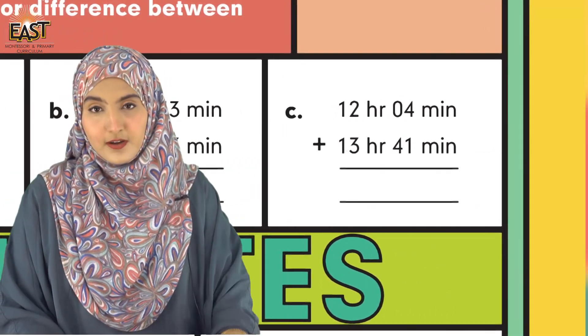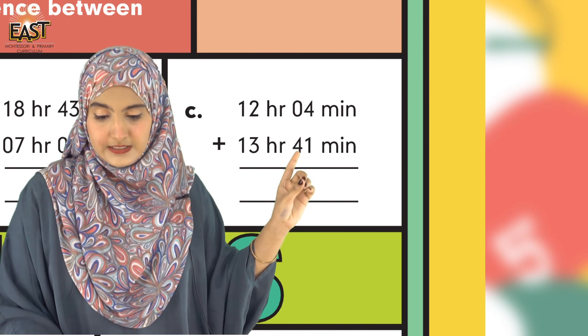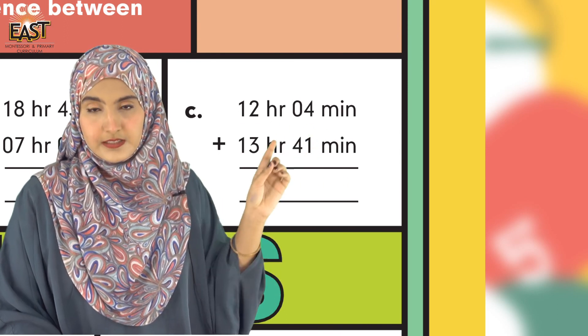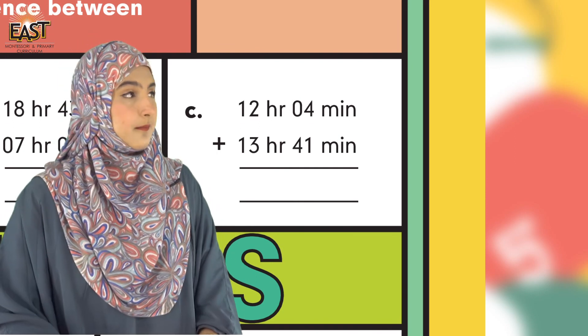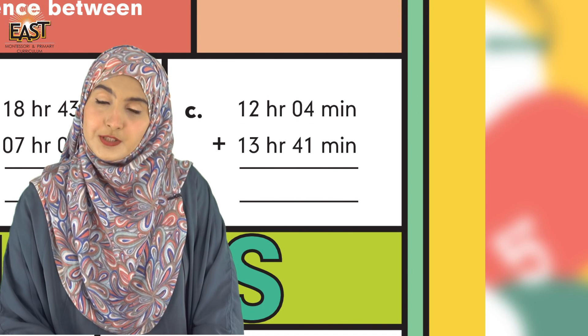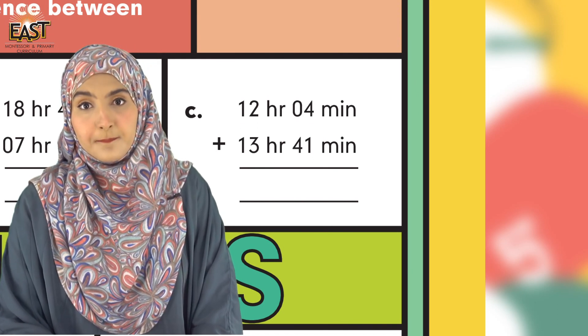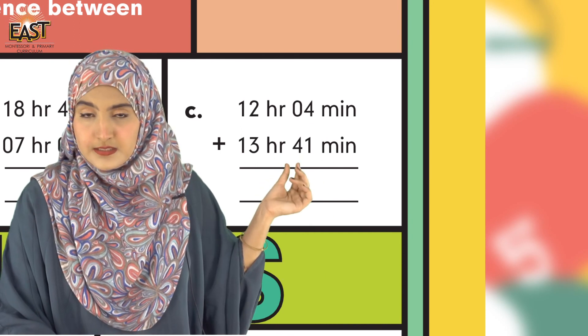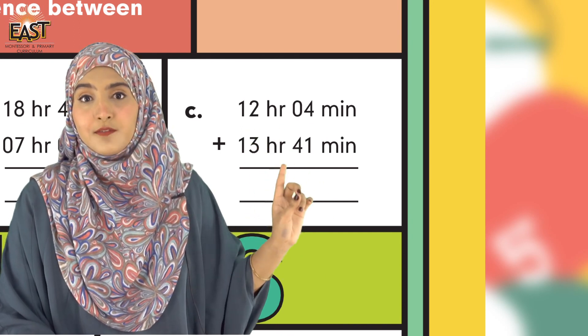Now we have another part: (c) 12 hr 04 min plus 13 hr 41 min. Here we have to add both the values. You have to add different units of time—hours to hours and minutes to minutes. But make sure while adding or subtracting, you mention the unit.